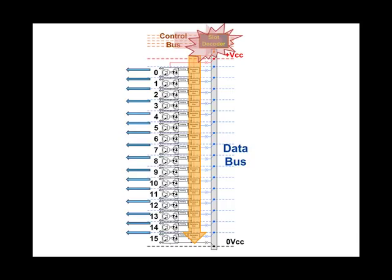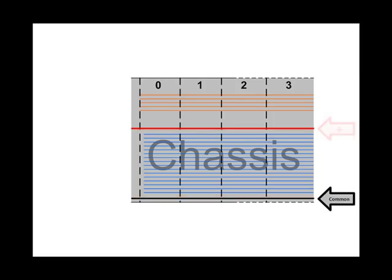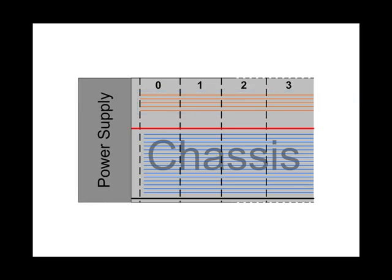Let's look at the backplane of the input module. Looking at a more complete section of the backplane, let's say for a four-slot chassis, but keeping the illustration simple with just 16 conductors for the data bus. The power, the common, and the control bus, and of course we need a power supply. The power supply supplies all the power for the I/O modules internally, but it does not supply power for the actual devices connected to the I/O modules in the field.